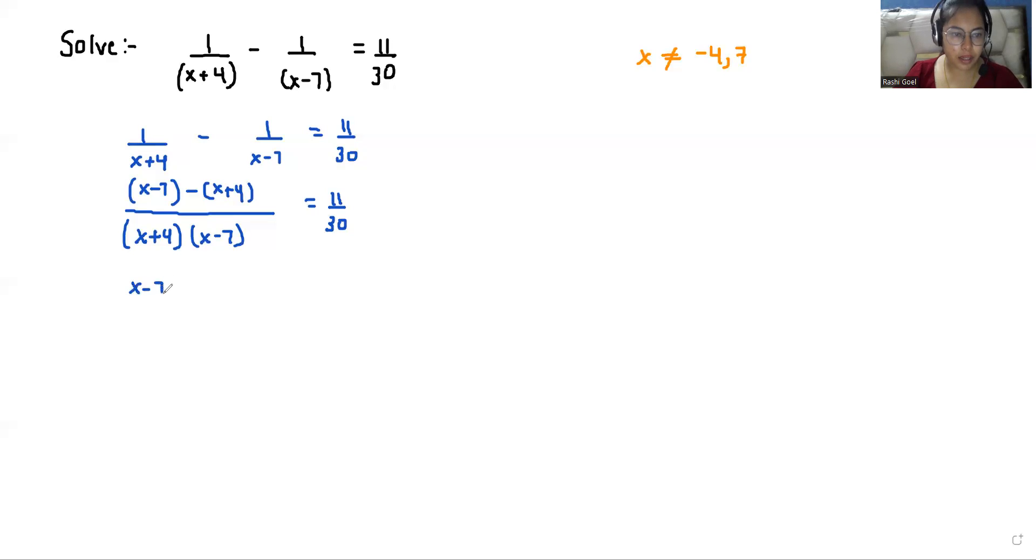So here (x-7) minus (x+4) equals 11 by 30. So we can multiply with the negative sign in the second bracket. So -x - 4 over, and if I multiply these two brackets, it becomes x² - 3x - 28 equals 11 by 30.